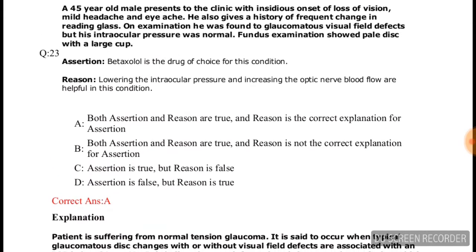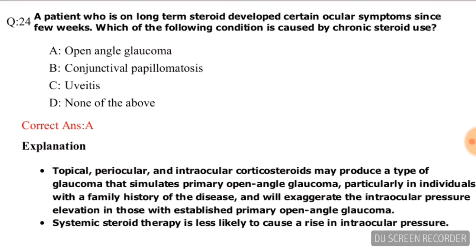Question number eighteen (assertion-reasoning): A 45-year-old male presents with insidious onset of visual loss, mild headache, and eye ache with frequent change in reading glasses. Examination shows glaucomatous visual field defects, normal IOP, and pale optic disc with a large cup. Assertion: betaxolol is the drug of choice. Reason: lowering IOP and increasing optic nerve blood flow are helpful. Both assertion and reason are true, and reason is the correct explanation — option A.